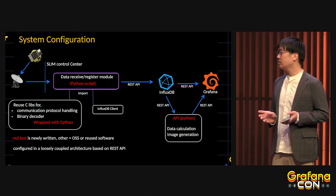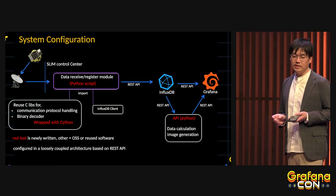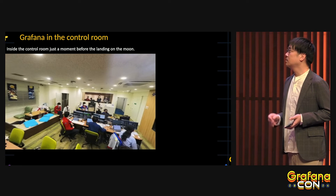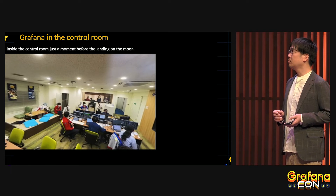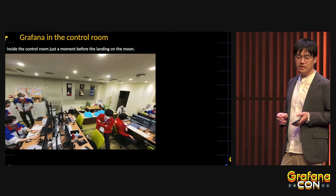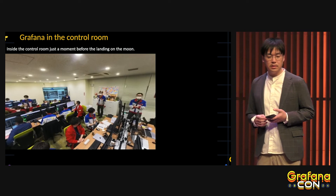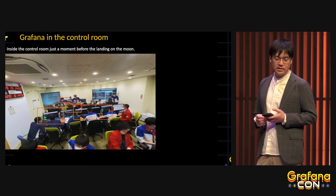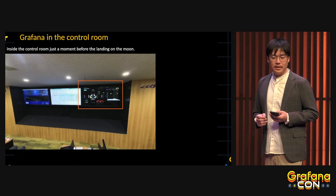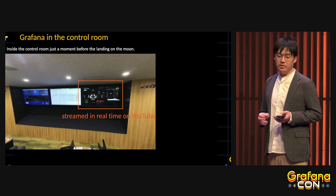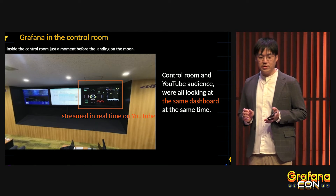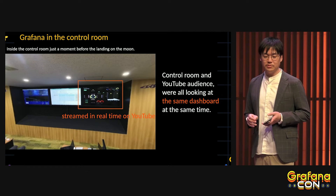This photo shows the inside of our control room just moments before the moon landing. There are many people and many displays. The Grafana-based system is used on these screens here and here. This screen was also streamed live on YouTube in real time, so during this critical phase, the control room team and the YouTube audience were all looking at the same Grafana dashboard at the same time.